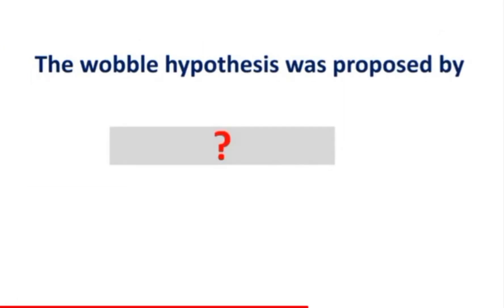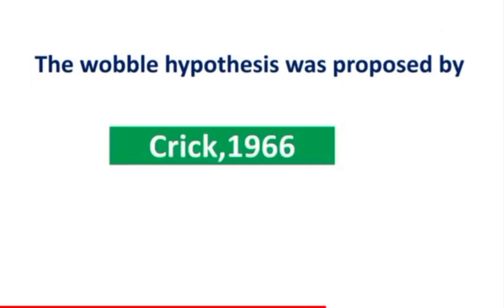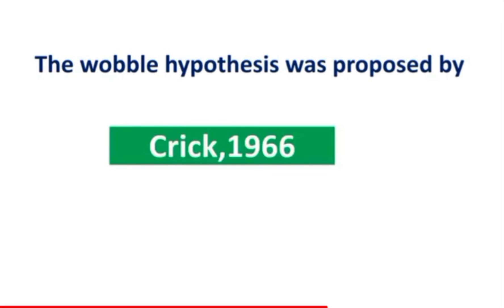The wobble hypothesis was proposed by whom? According to the wobble hypothesis, which nucleotide of a codon is not significant?